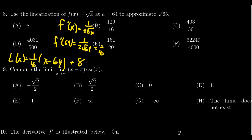So we need to compute L(65). Substituting into our formula, we get L(65) = (1/16)(65 - 64) + 8. Since 65 - 64 = 1, this simplifies to 1/16 + 8.